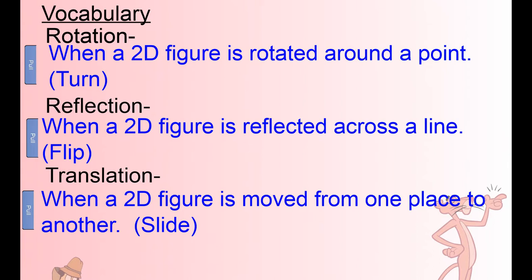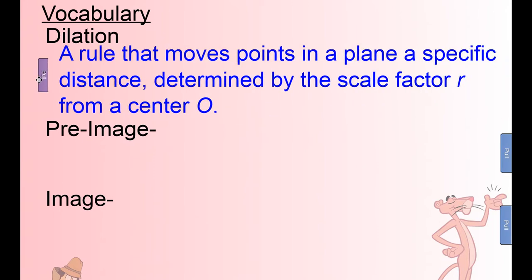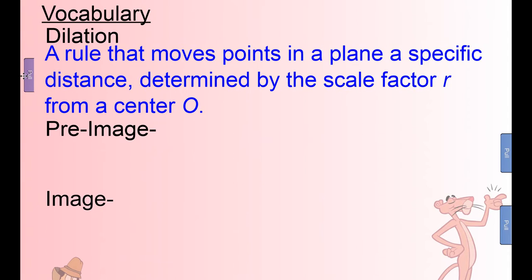We've got three more vocab words. This first lesson is very vocab intensive. Next, we have a dilation. A dilation is a rule that moves points a specific distance determined by a scale factor R and center point O. Essentially, the dilation is the bigger or smaller version. I think of a dilation as like a zoom — like if you pinch to zoom on a picture.